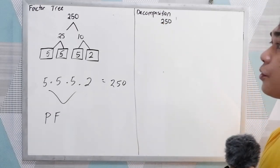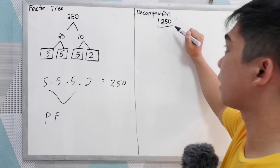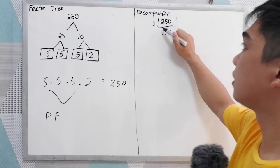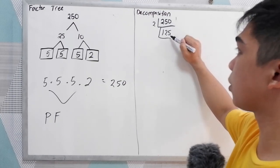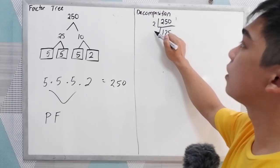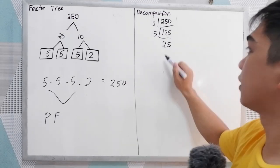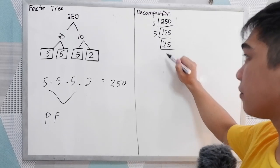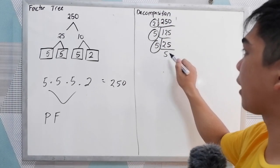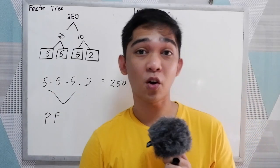Next, using the decomposition method with continuous division. 250 is divisible by 2, giving 125. 125 is not divisible by 2 and not divisible by 3, but 125 is divisible by 5, giving 25. Then 25 divided by 5 is 5, and 5 divided by 5 is 1. So the prime factors are 2, 5, 5, and 5. The results match both methods.